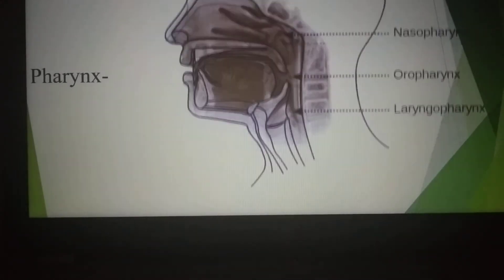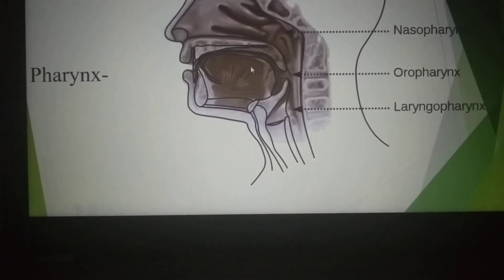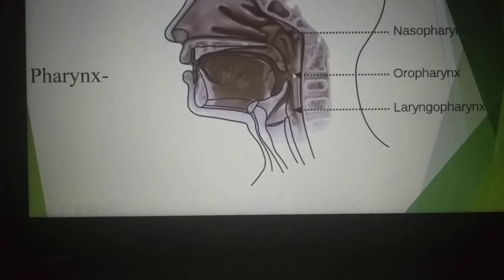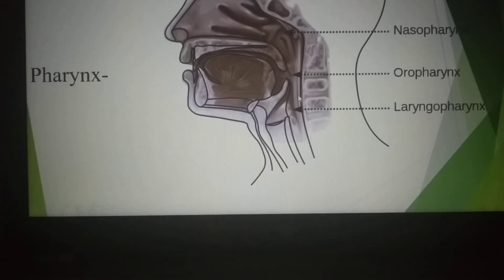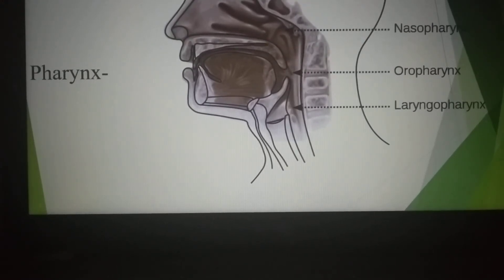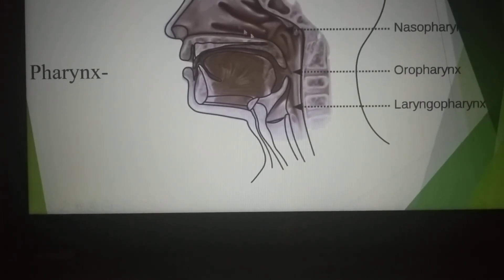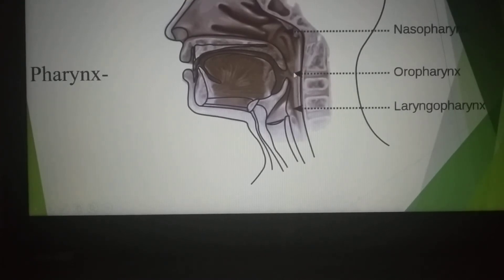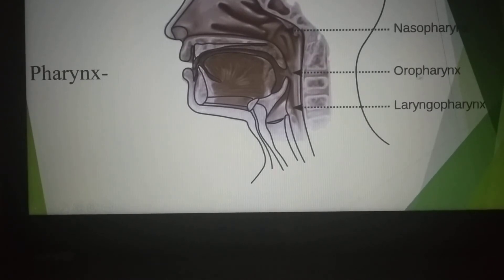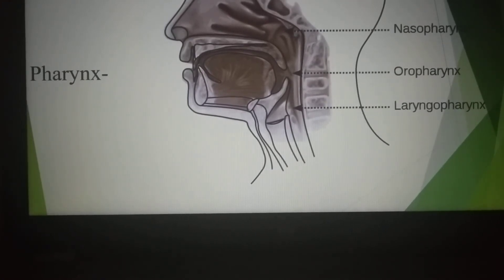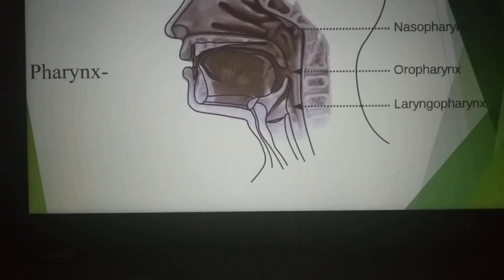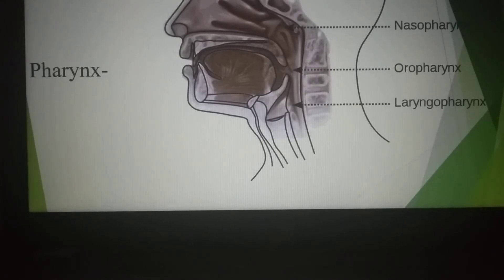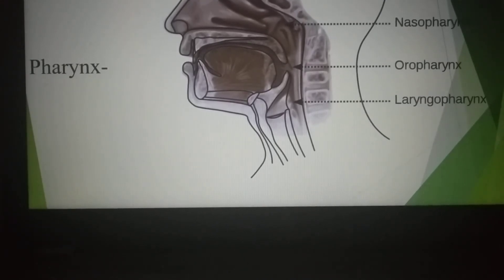Pharynx. Just at the end of the buccal cavity, there is a tube-like structure called the pharynx. We may divide it into three: nasopharynx, which starts from the nasal cavity; oropharynx, just beneath the oral cavity; and laryngopharynx, beneath the oral cavity. Its function is to help swallow food from the buccal cavity to the esophagus. There is also a lid-like structure named the epiglottis.